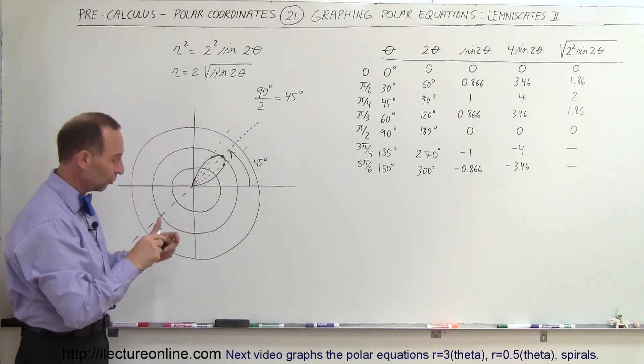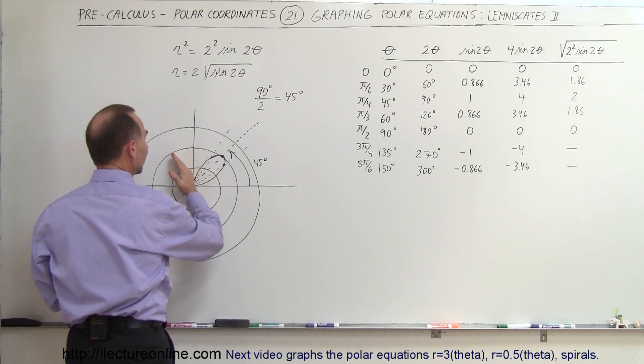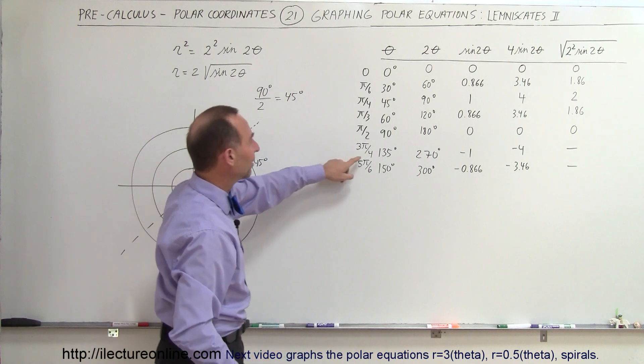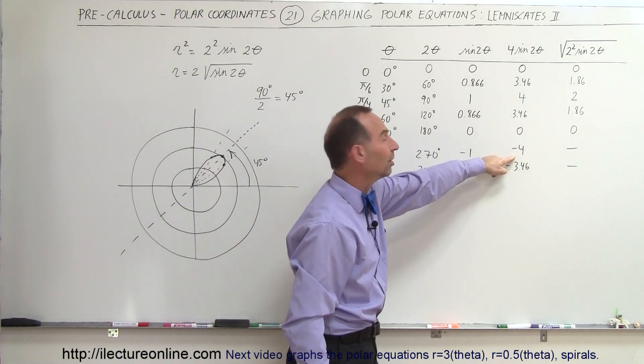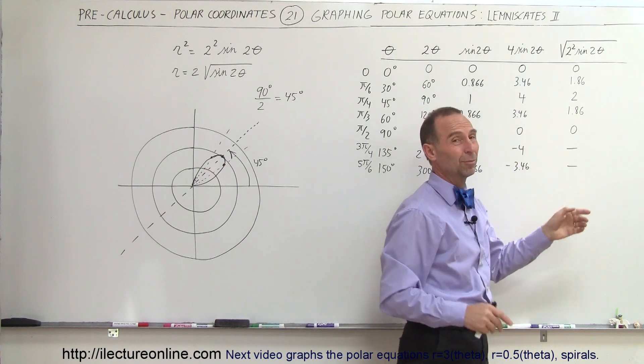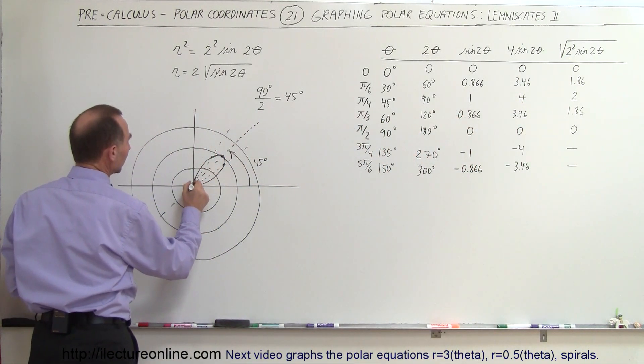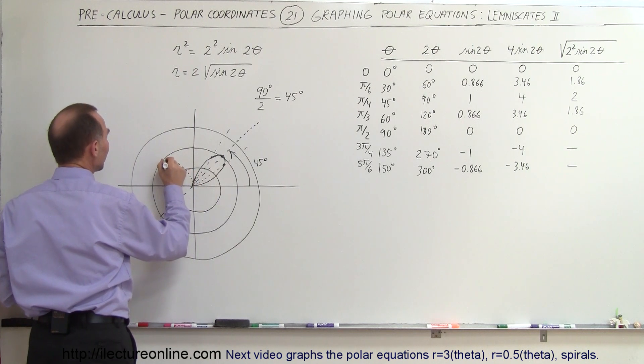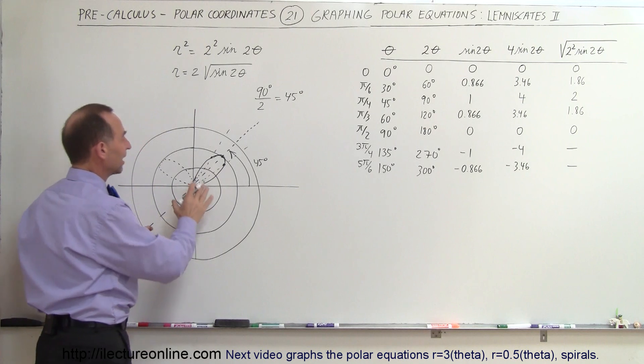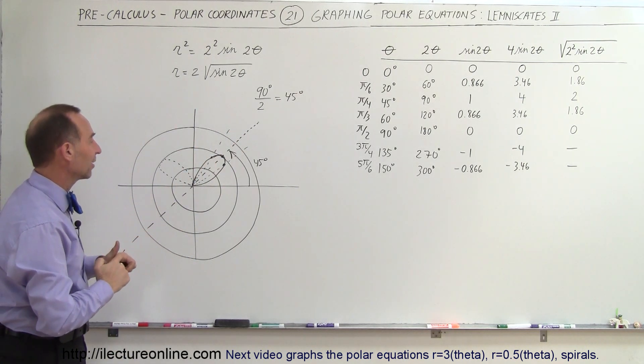Now notice what happens when we continue beyond 90 degrees. When we go to 135 degrees, which is 45 degrees in this direction, we should again find a maximum value here. But notice in this case it's negative, and when we take the square root of a negative number we don't get a valid value. So the leaf that normally would be here is simply not going to be valid, and so we're going to go ahead and put a little dash leaf there saying it's not really there, but that's what would happen if we could draw the negative values as well.